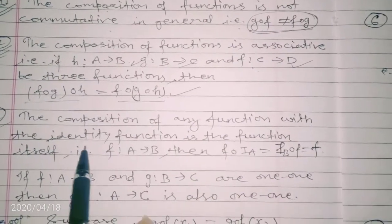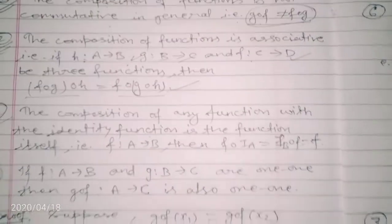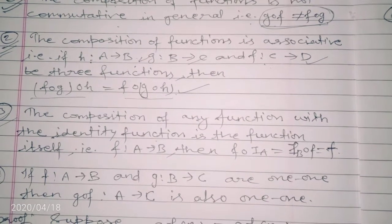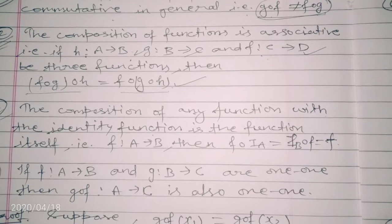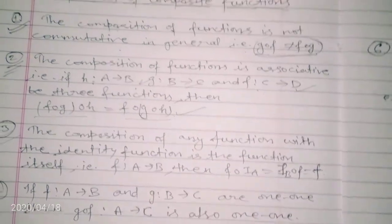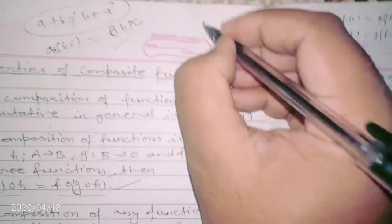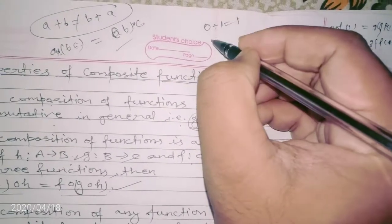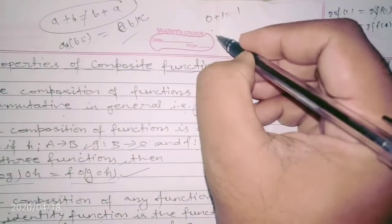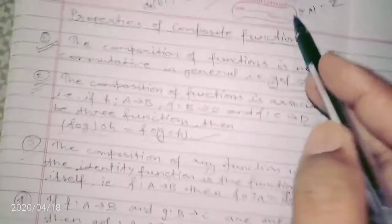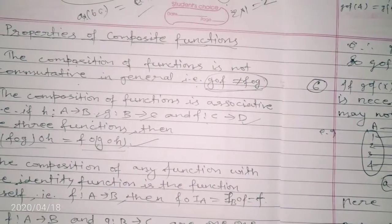The third property concerns composition of any function with the identity function. Just as in class 7 or 8 we studied identity elements for rational, natural, and whole numbers — for addition the identity element is zero (0+1=1), and for multiplication the identity element is one (2×1=2).